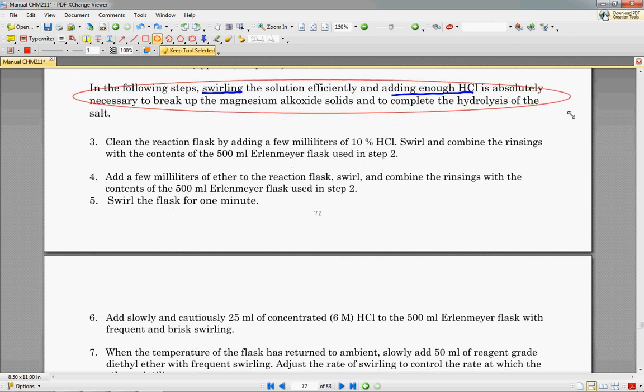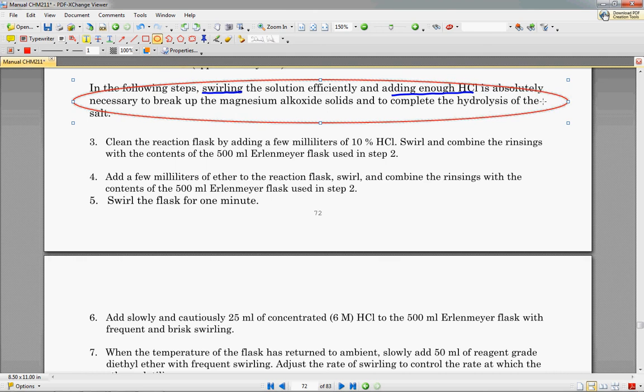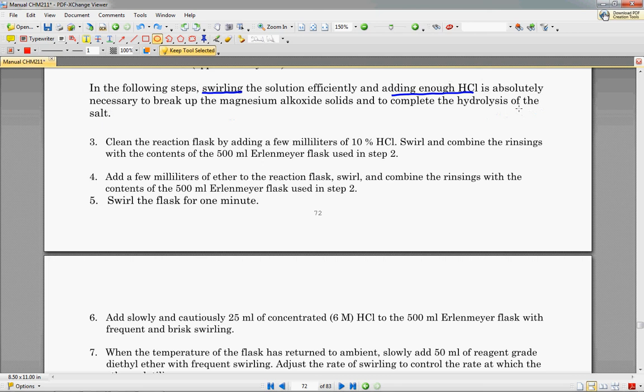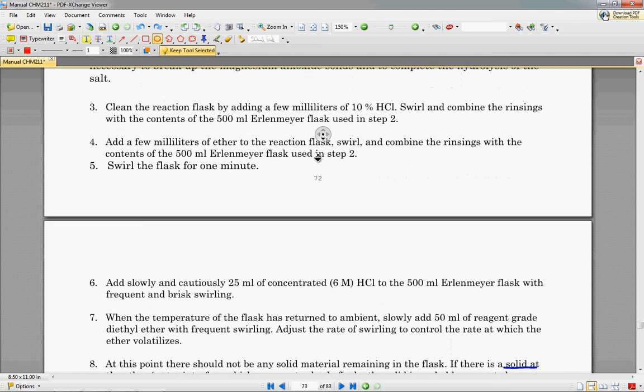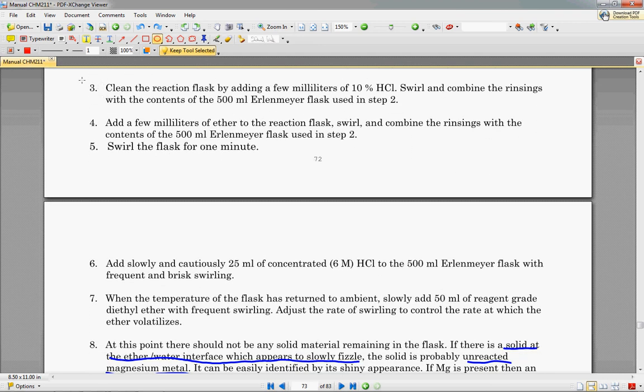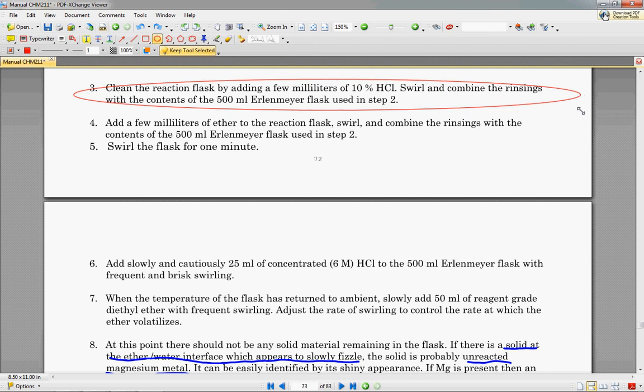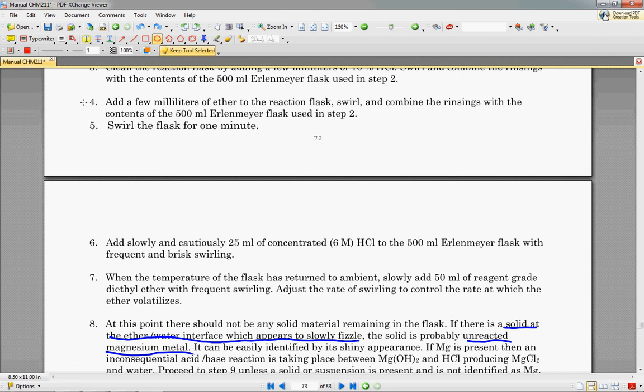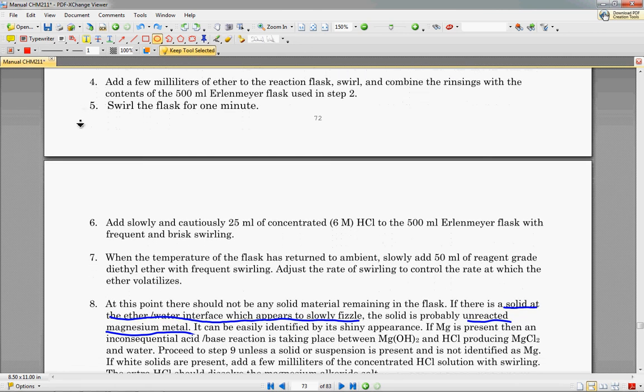So in the following steps, swirling the solution and adding enough HCl is absolutely necessary to break up the magnesium alkoxide solids and complete the hydrolysis of the salt. So remember, it's a nice salt that falls out of solution and you need to add enough hydrochloric acid in order to complete the addition of that hydrogen to the molecule. Then we're essentially going to add some extra HCl, try to get rid of all the, any sort of dust that remains at the bottom.